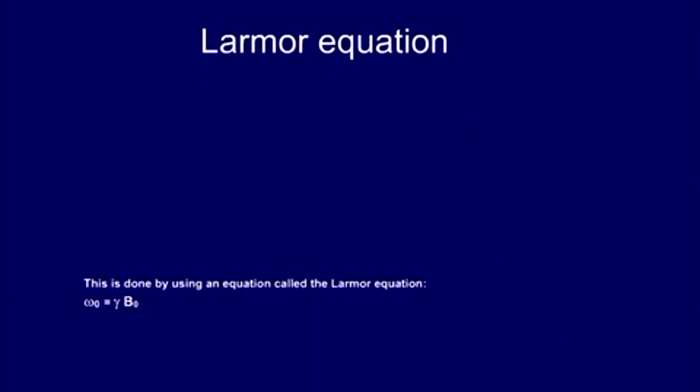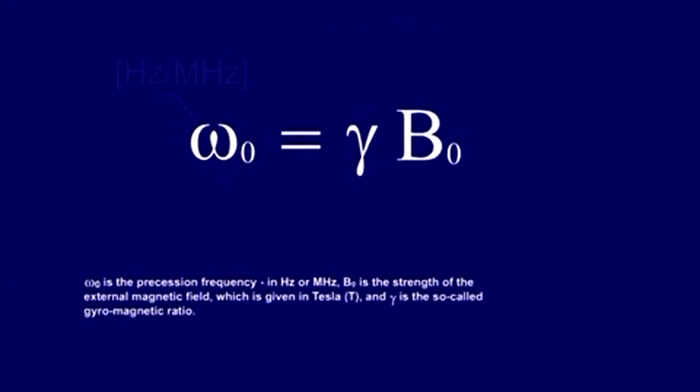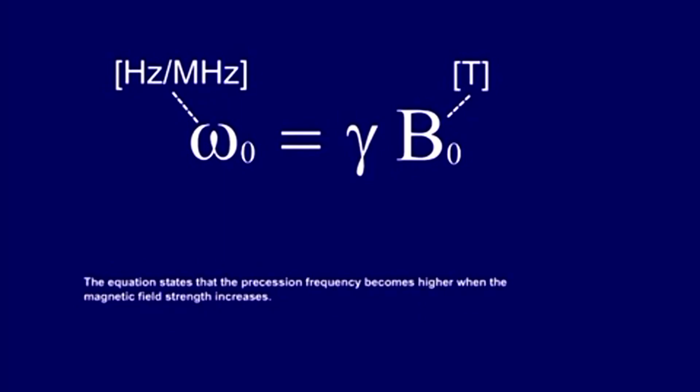Omega zero is the precession frequency in hertz or megahertz. B zero is the strength of the external magnetic field, which is given in tesla (T), and gamma is the so-called gyromagnetic ratio. The equation states that the precession frequency becomes higher when the magnetic field strength increases. The exact relationship is determined by the gyromagnetic ratio, gamma.